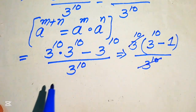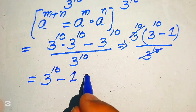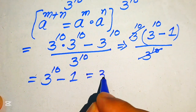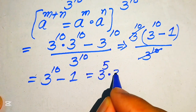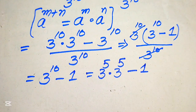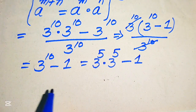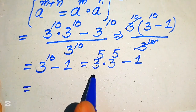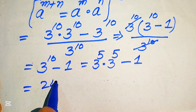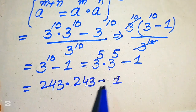The 3 to the power of 10 in the numerator is cancelled by 3 to the power of 10 in the denominator, and we obtain 3 to the power of 10 minus 1. In the next step, we break 3 to the power of 10 as 3 to the power of 5 multiplied by 3 to the power of 5, minus 1. Since a calculator is not allowed, we note that 3 to the power of 5 equals 243.